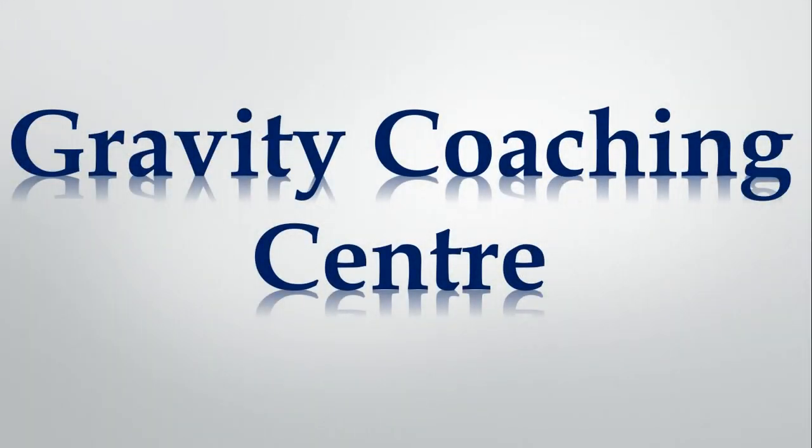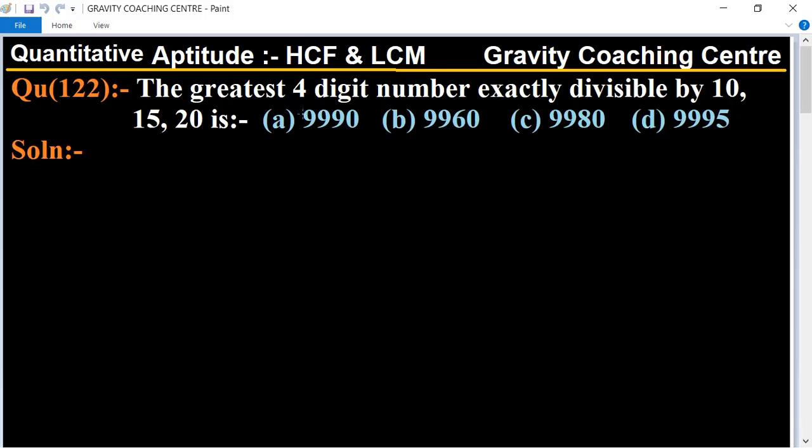Welcome to our channel Gravity Coaching Centre. Quantitative aptitude chapter HCF and LCM, question number 122: The greatest four-digit number exactly divisible by 10, 15, 20 is: (a) 9990, (b) 9960, (c) 9980, (d) 9995.